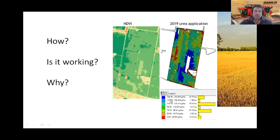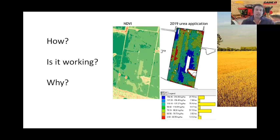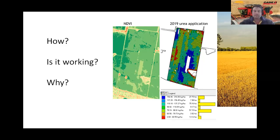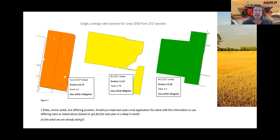A couple of questions to ask yourself: how do we do it, is it working, and why do we do it? You can see here an NDVI, a yield protein map, and a urea map. I've always spread urea trials but never been able to easily see differences in years. Since we've had a protein map, we've been able to really hone in on high and low zones and get some good data. I want to run you through our very simple way of using protein maps for nitrogen management — I don't like spending all year on the computer trying to do variable rate maps.